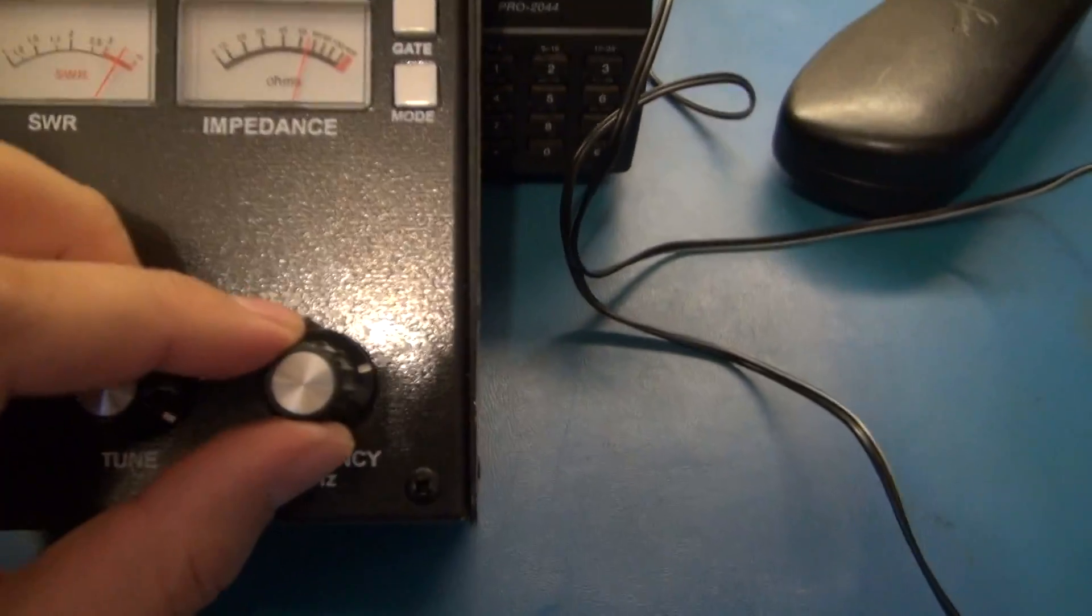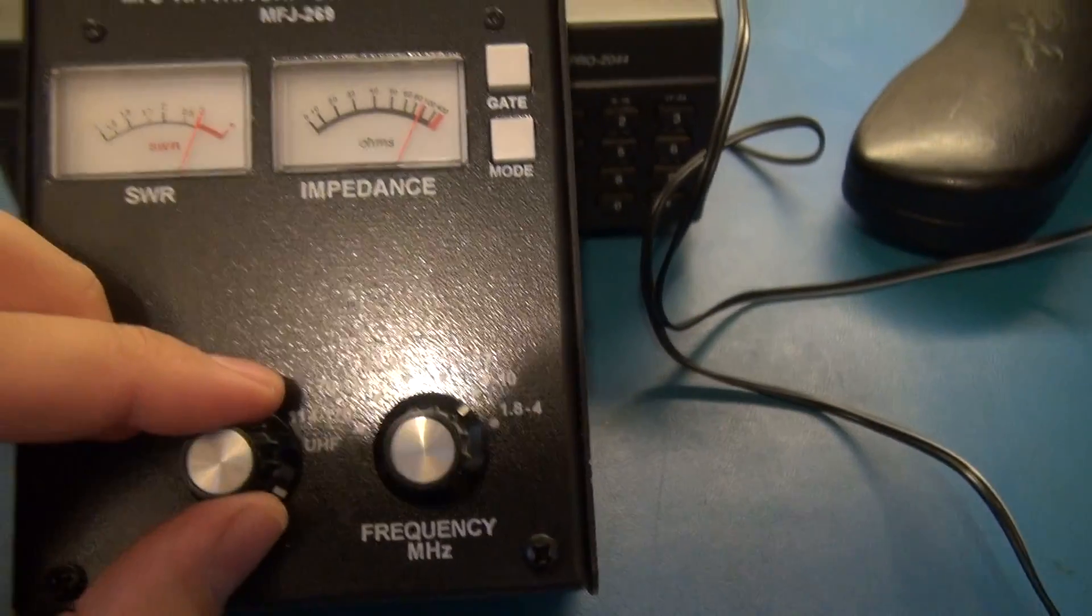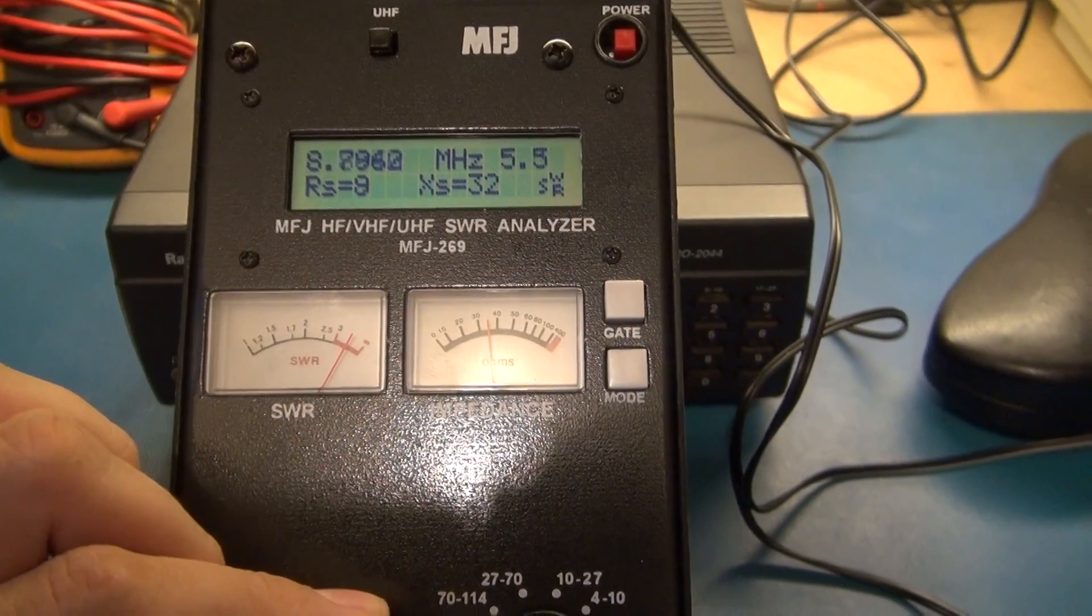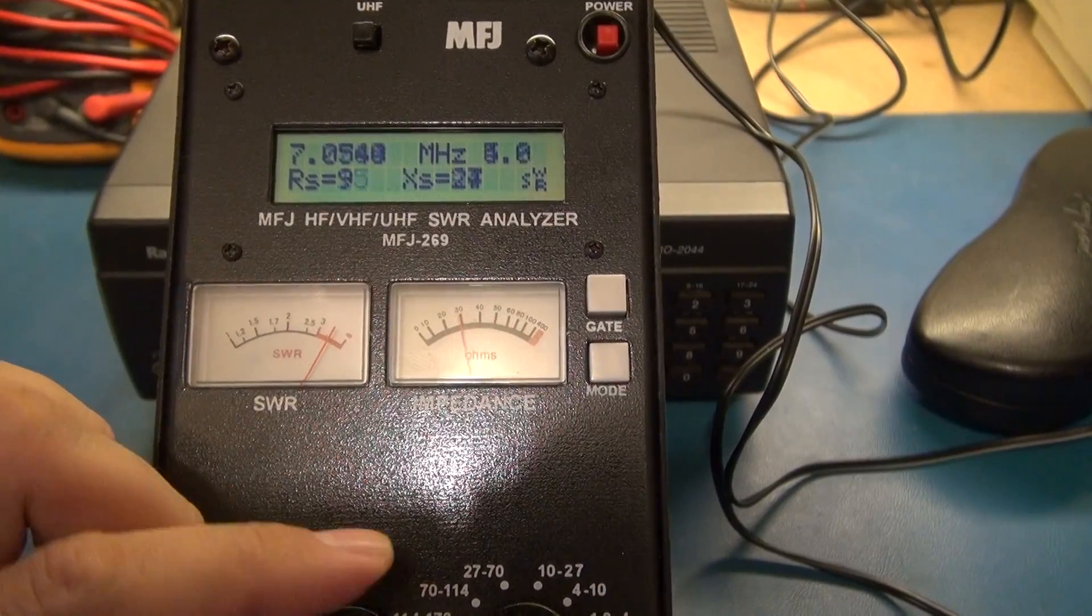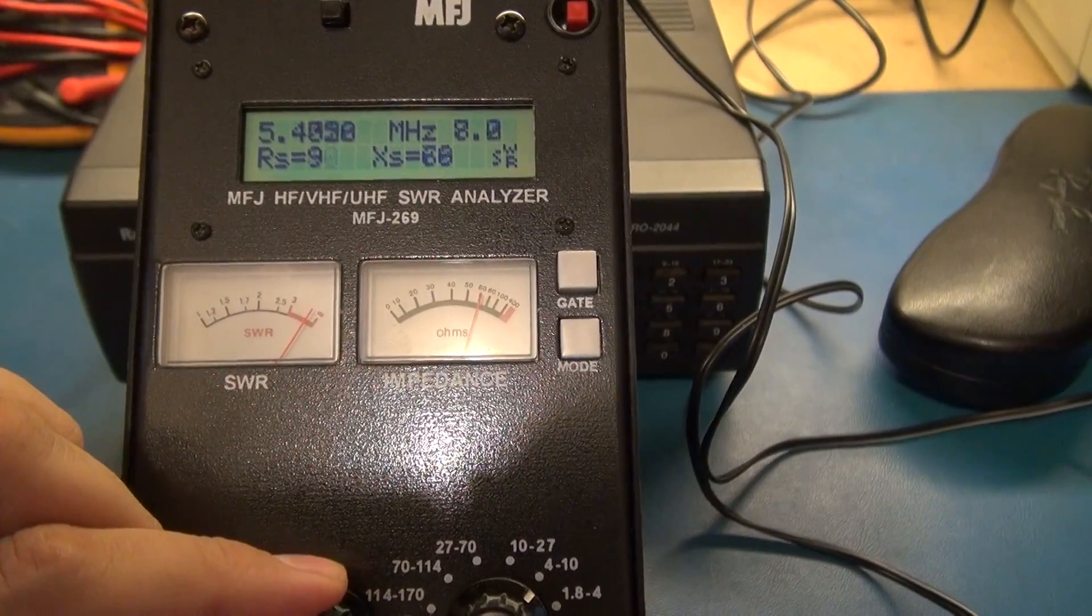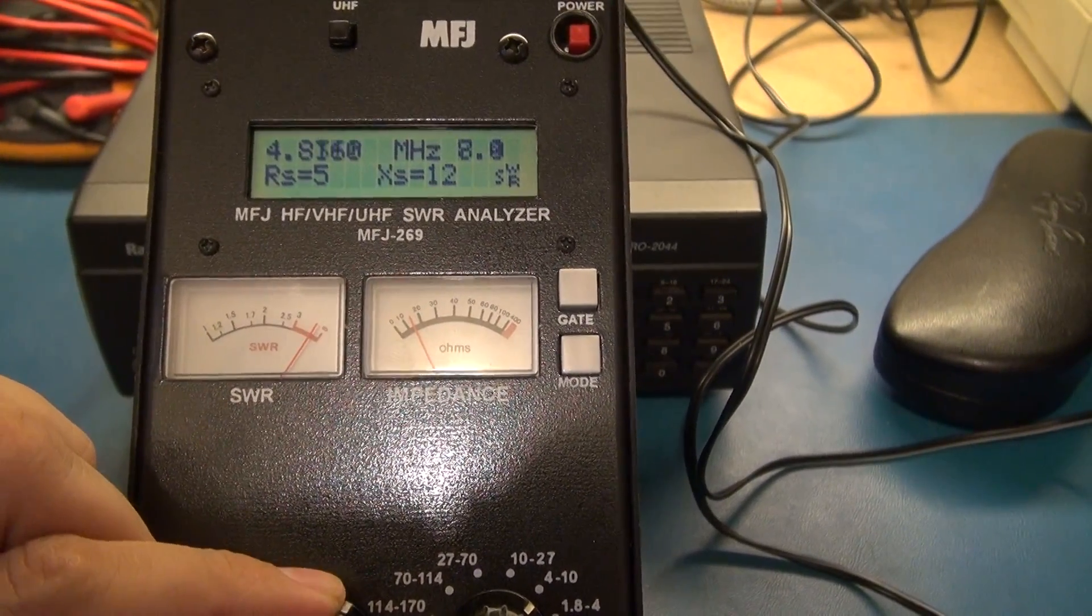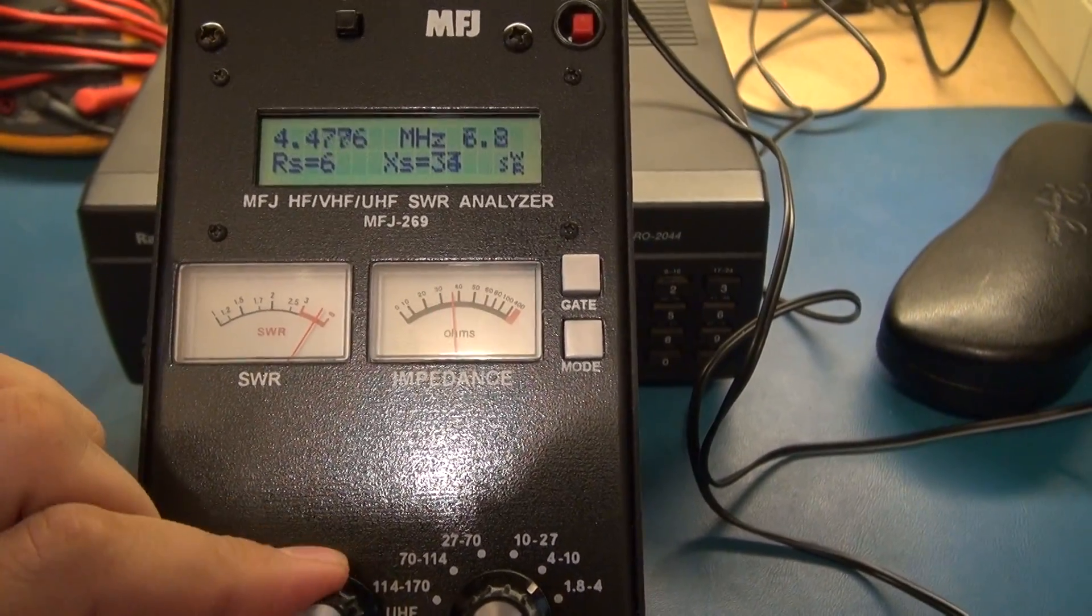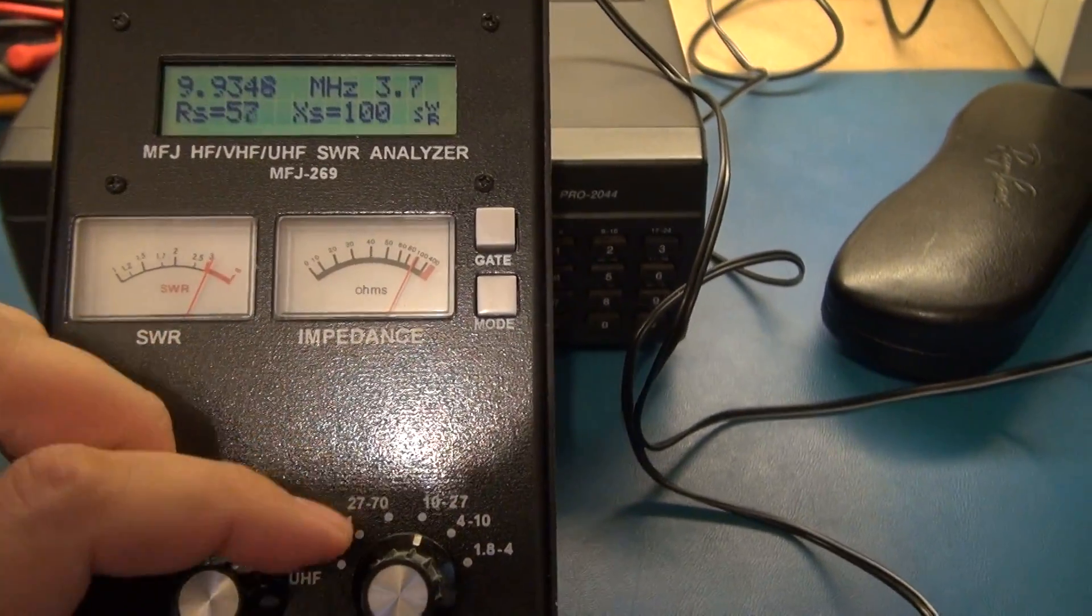All right, now I'm going to switch it over to 4 to 10 MHz. So that'll start in 10, we're going the other way. Still not that bad, not that bad. Still doing, this is without a tuner. This is just hooked directly to the antenna. There, it's getting up there now, 4 MHz. I mean, it has its dips.